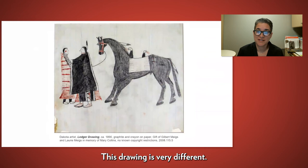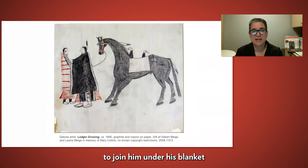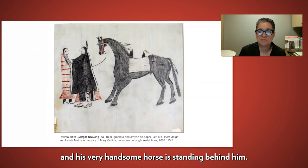This drawing is very different. Instead of a victory in battle, this scene depicts what looks like a romantic conquest instead. In many Plains tribes, before people were forced onto reservations, when a young man was courting, he would invite the young woman to join him under his blanket so they could have some private time, even though they were surrounded by her family. In this scene, you can see the young man reaching out with his large blanket, and his very handsome horse is standing behind him.